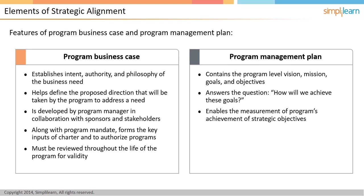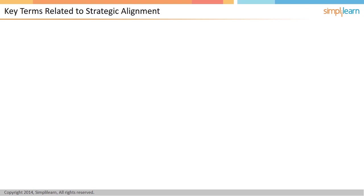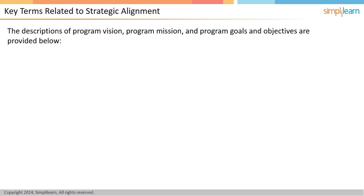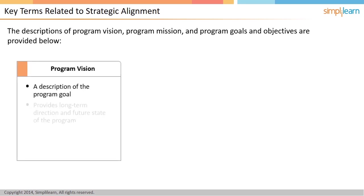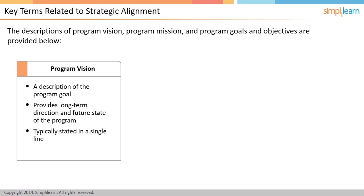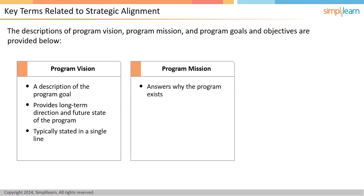Let us now look into various key terms related to strategic alignment in detail. We have referred to terms like vision, mission, goals, and objectives. The vision is a description of the goal — it describes the long-term direction and future state. For example, the vision of a program may be that it aims to deliver a certain financial outcome, like revenues or margins. The program vision needs to clearly establish what the goal is, in a way that it should be possible to answer the question: have you reached there at the end of the program? A vision will typically be a one-liner. The mission, on the other hand, answers the question: why do we exist? It establishes the philosophy, the values, and the overall environment in which the program operates.